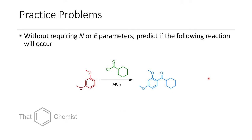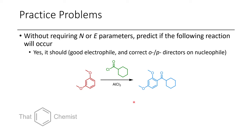Before we get into that, let's go through the practice problems I assigned last lecture. In this first problem, we take 1,3-dimethoxybenzene and treat it with a cyclohexane-containing acyl chloride in the presence of aluminum chloride, which acts as a Lewis acid catalyst. This reaction should occur very easily because this is a good electrophile, and we have good ortho-para selectivity from 1,3-dimethoxybenzene.